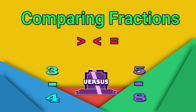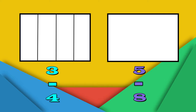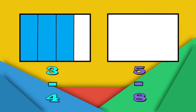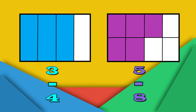Let's say we're comparing the fraction three fourths versus five eighths, and you're trying to figure out which fraction is bigger. You can start by drawing two rectangles of the same size — they have to be the same size. On the first rectangle, you are going to divide it into four equal pieces and shade three of those pieces in. On the second rectangle, you are going to divide it into eight equal pieces and shade five of those pieces in. Can you now tell which fraction is greater?